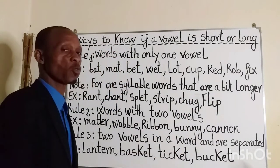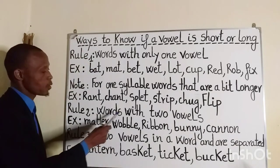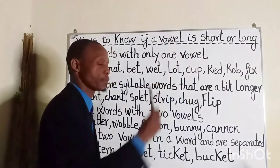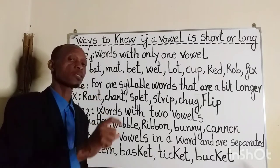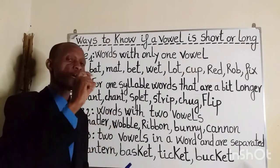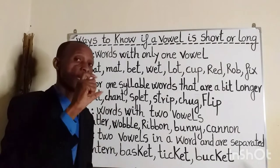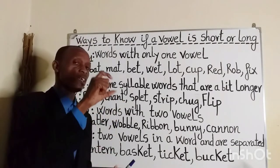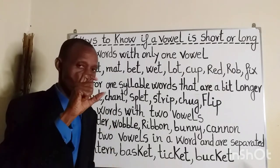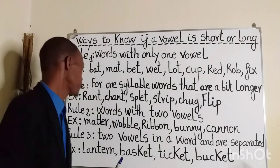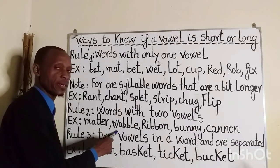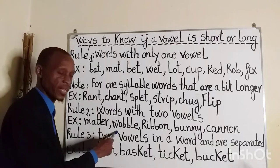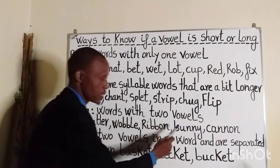Rule number two: words with two vowels. If a word has two vowels and the first vowel is followed by a double consonant, the vowel sound is short. Examples: 'rattle,' which means to shake or make something shake; 'ribbon'; 'bunny,'.